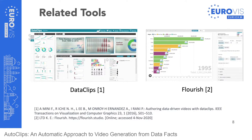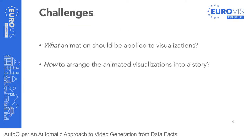To ease the creation of data videos, some tools have been developed to support video authoring. For example, DataClips provides a set of animation clips for visualizations such as bar charts, pictographs, and maps, so that users can choose clips and organize them into a video. Similarly, Flourish developed various templates for animated visualizations. Although these tools have improved the efficiency of creating data videos, there still remain two challenges for novices: what animations should be applied to visualizations, and how to arrange animated visualizations into a story?